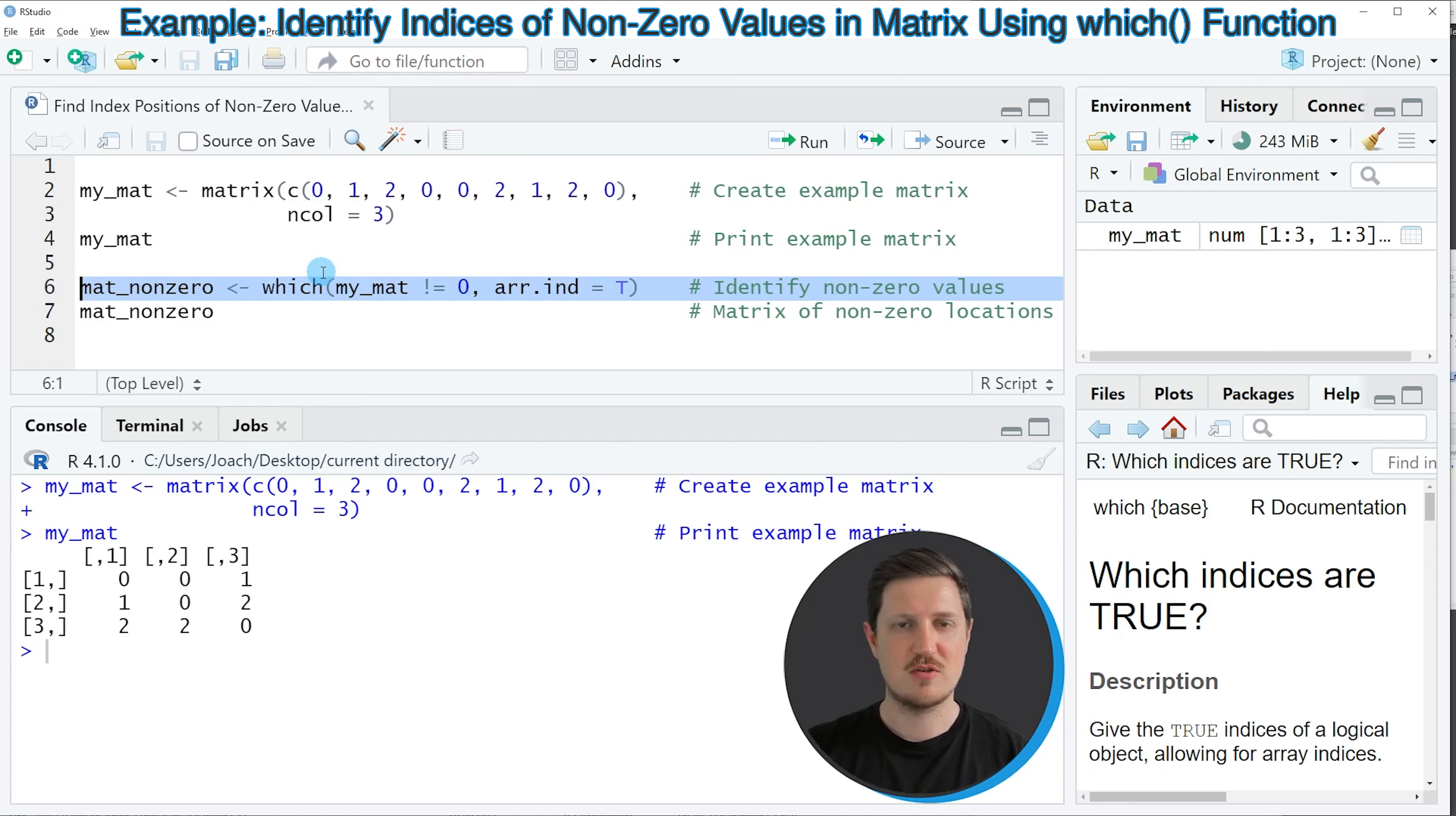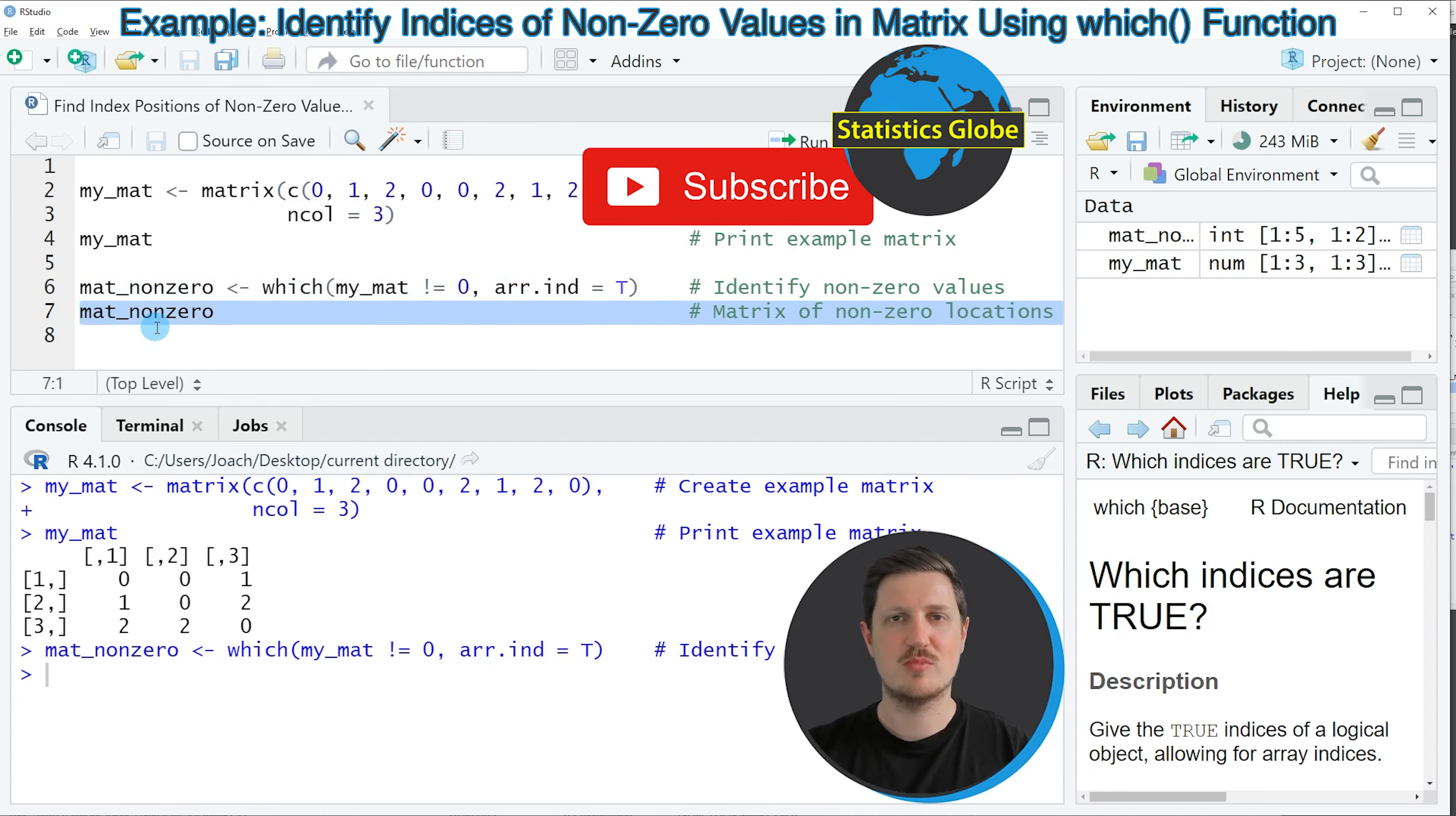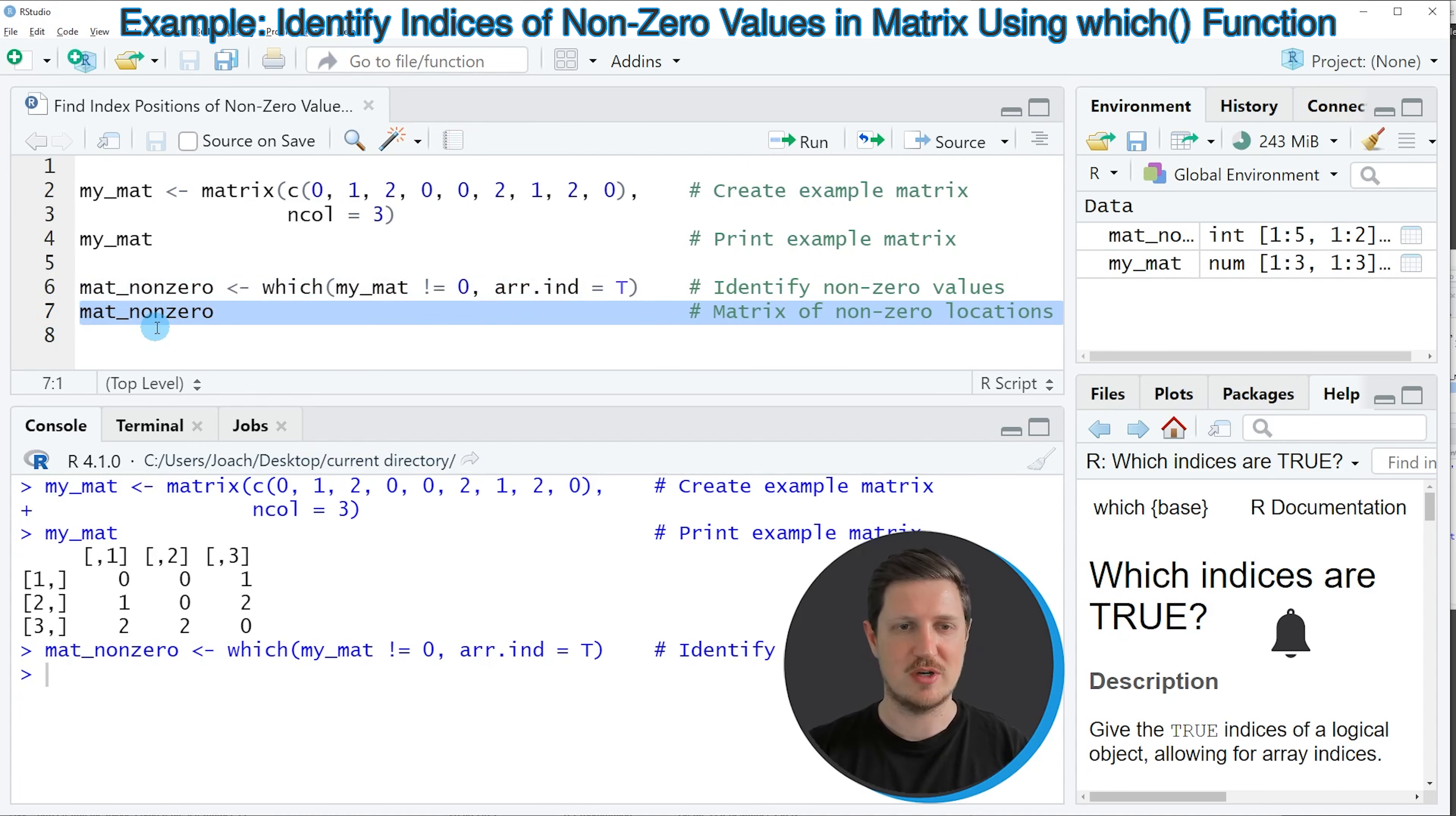So if you run line 6 of the code, you can see at the top right of RStudio that a new matrix object is appearing, which is called MatNonZero. And we can print this matrix to the RStudio console by running line 7 of the code.